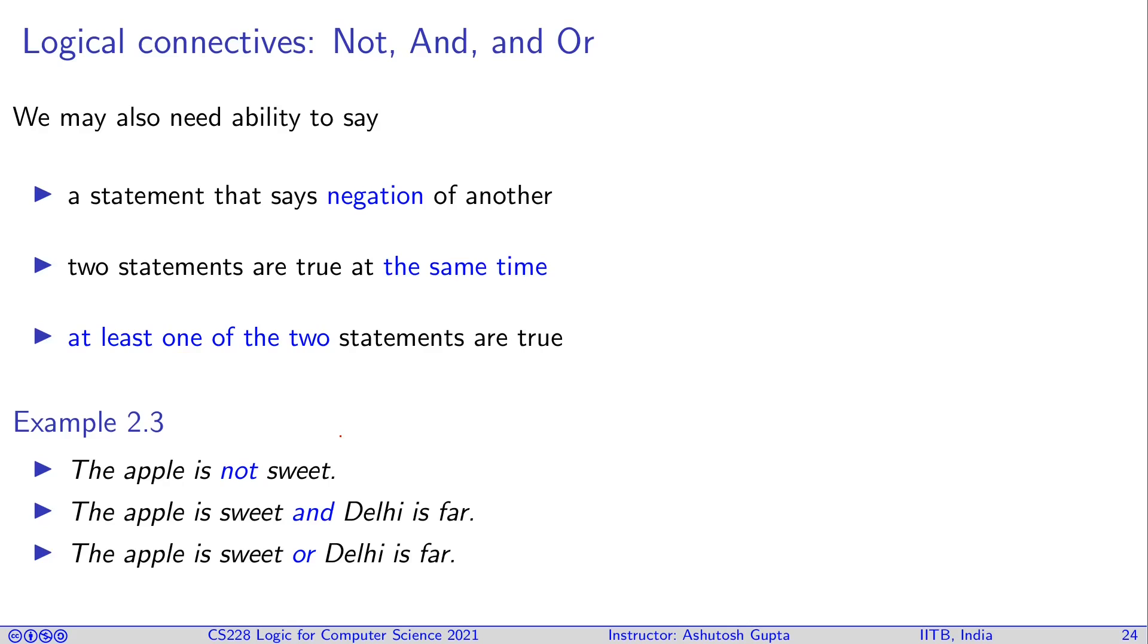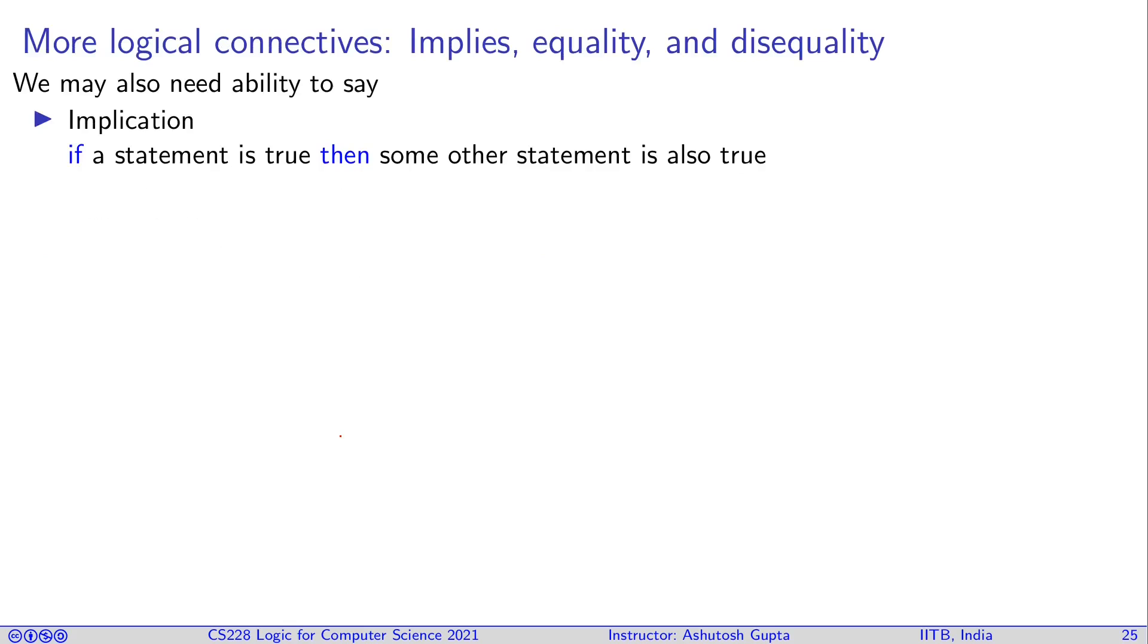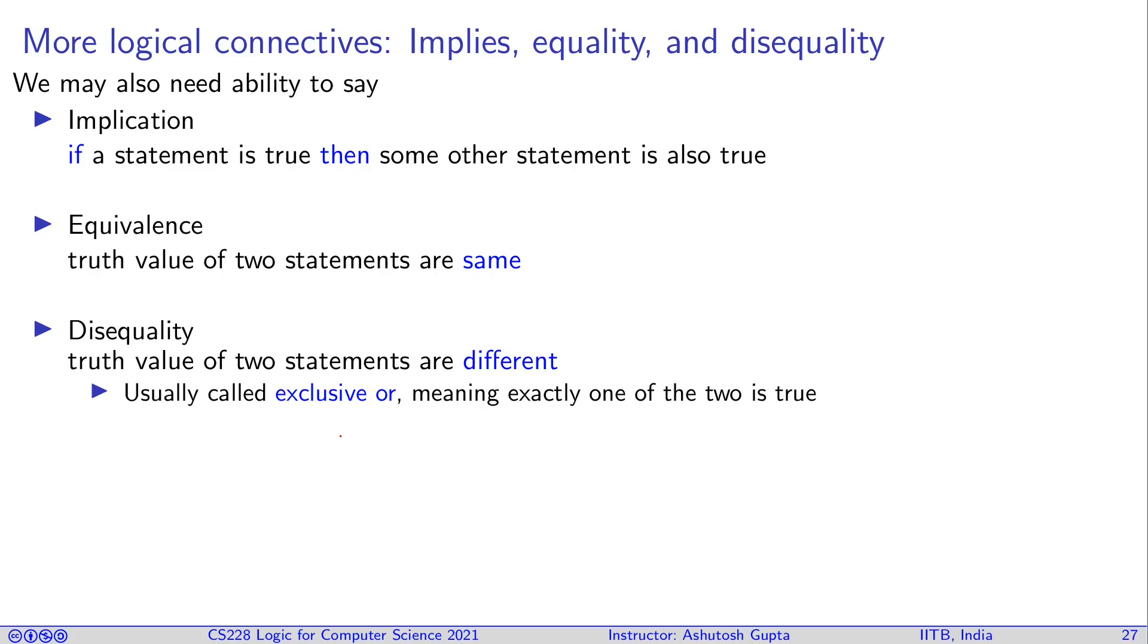What else can we do with propositions? There are more ways of connecting them. Implication: you may want to say that if some proposition is true then some other proposition also becomes true. That's called implication. Or you can have equivalence, which says two propositions are true at the same time or false at the same time. It cannot be the case one is true, the other one is false, or the other way around. Third is disequality, which means the truth values are in disagreement between two statements. If one is true then another one must be false or the other way around. This is typically called exclusive or, and sometimes it also refers to disequality. Please remember that this exclusive or and disequality are the same thing.